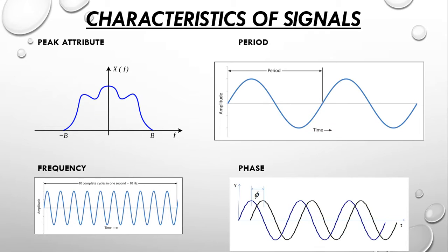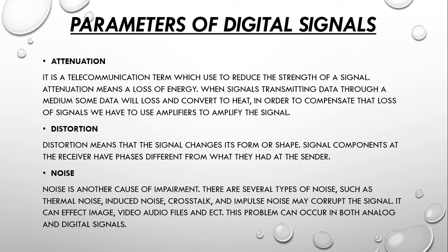Hertz is the standard unit of frequency. Phase is the position of a point in time on a waveform cycle. A complete cycle is defined as the interval required for the waveform to return to its arbitrary initial value. Next, we'll look at the parameters of digital signals.